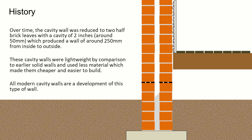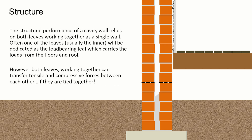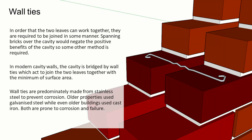These cavity walls were lightweight by comparison to earlier solid walls, used less material, and that subsequently made them cheaper and easier to build. All modern cavity walls are a development of this type of wall. The structural performance of a cavity wall relies on both leaves working together as a single wall. Often one of the leaves — usually the inner one — will be dedicated as the load bearing leaf which carries the loads from the floor and the roof. However, both leaves work together to transfer tensile and compressive forces between each other if they are tied together. In order for the two leaves to work together, they are required to be joined in some manner; spanning bricks over the cavity would negate the positive benefits of the cavity, so some other method is required.